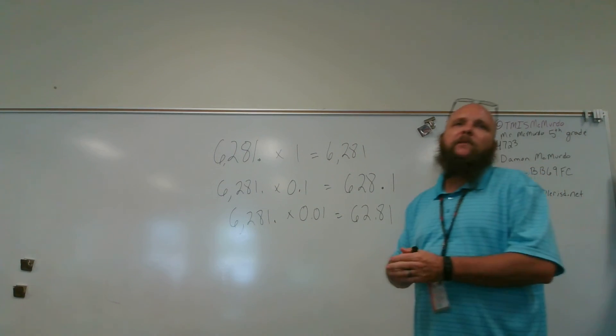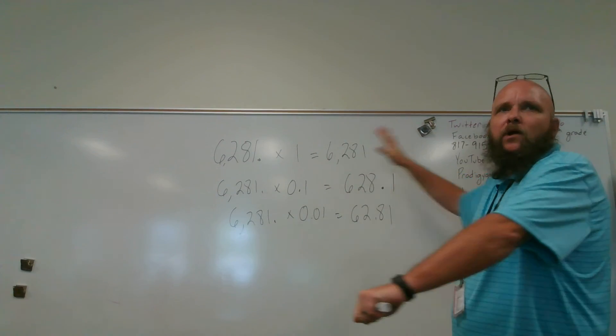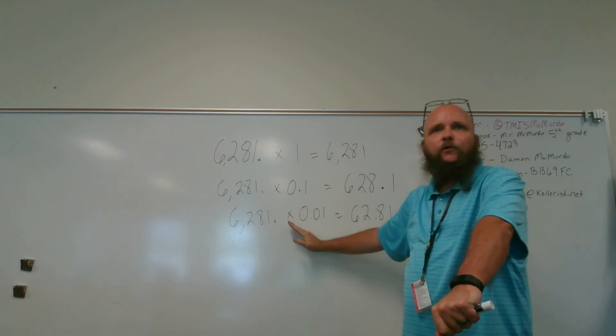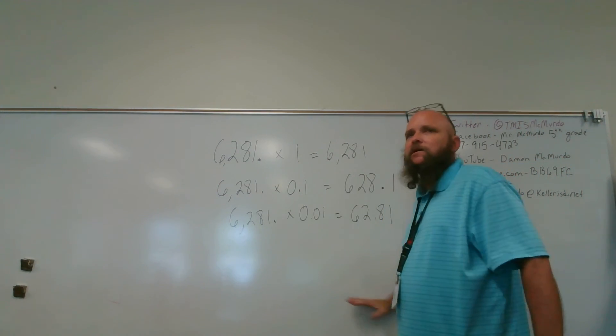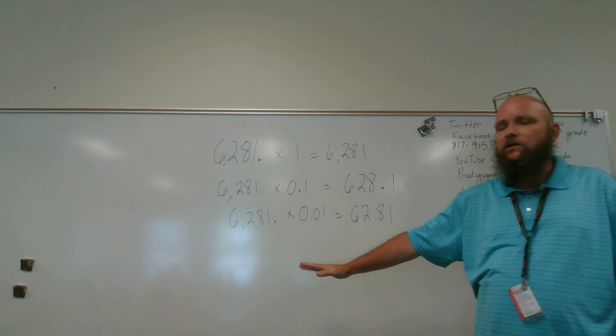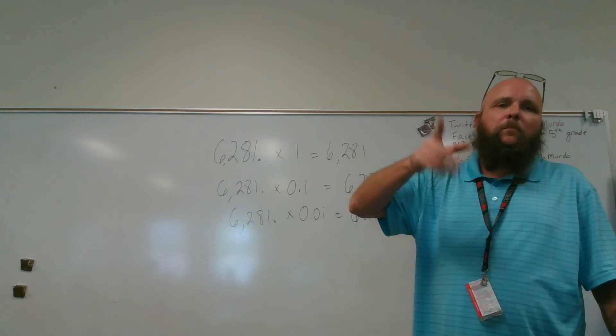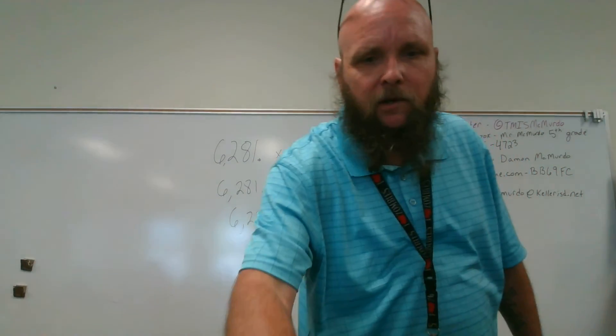If I multiply this number by one-hundredth, my decimal point's going to move two places to the left. 62.81. So multiplying by 10, I go to the right. Powers of 10, go to the right. Tenths, hundredths, thousandths, go to the left. We all good? Yes. Be kind to one another. Peace out. Boom, shakalaka. Love y'all.